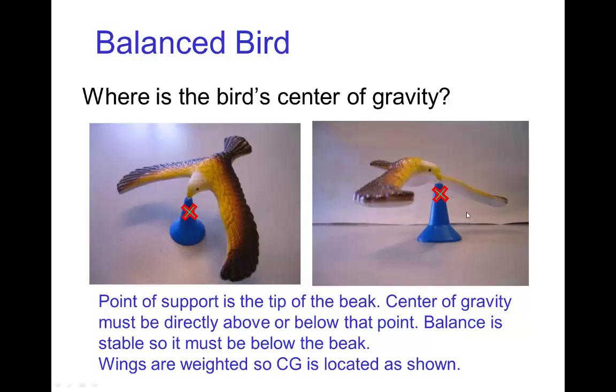Now how is that possible? Well for this toy, it's a light plastic except on the ends of the wings. The ends of the wings have lead coins inserted and that happens to put almost all the weight on the two wingtips and then the center of gravity is located at the X.